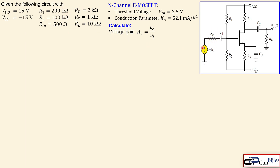We also have RIN and VIN representing the source modeling, a load RL, coupling capacitors C1 and C2, and a bypass capacitor CS which bypasses the source resistor RS. The circuit is symmetrically biased with VDD and VSS. The n-channel enhancement MOSFET parameters are: threshold voltage VT = 2.5 V and conduction parameter KN = 0.5 mA/V².